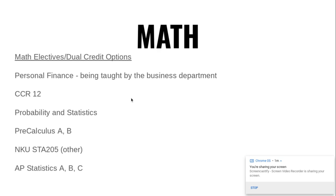Your options for electives are personal finance, which is being taught through the business department starting next year, CCR 12 for students who have not reached a benchmark on the ACT of 19 in the mathematics section, or probability and statistics. Those three courses are all one trimester.